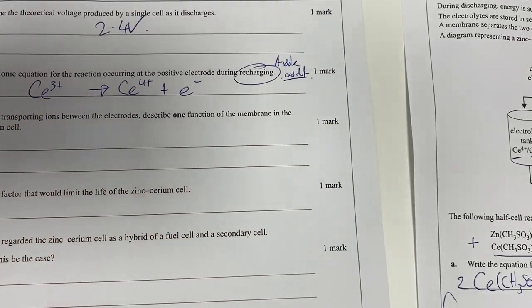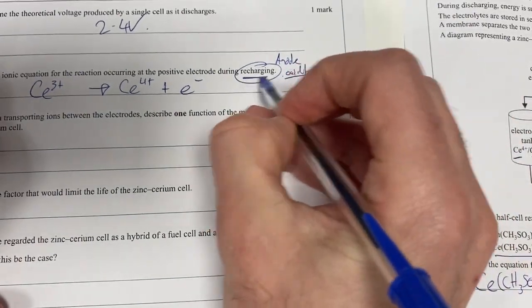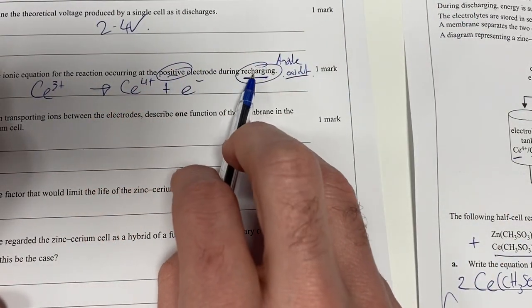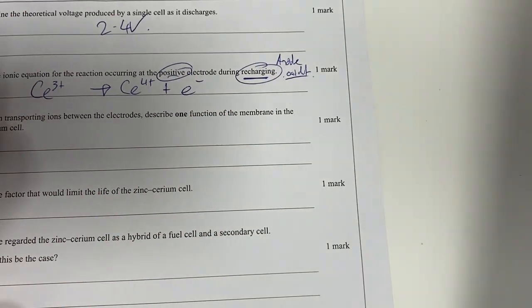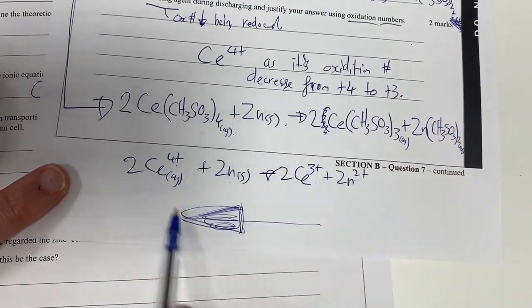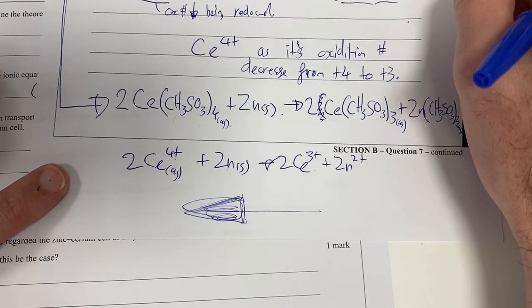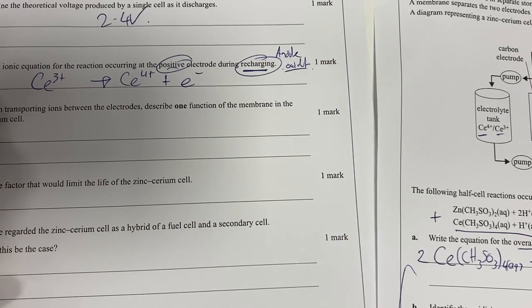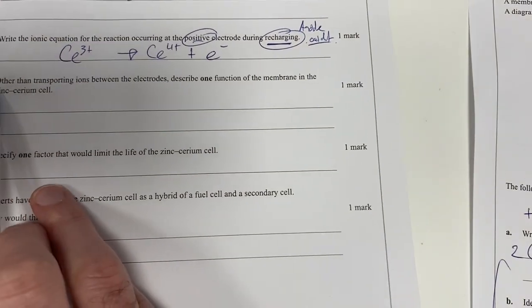That should be my answer there for the ionic equation for the recharge at the anode. I'm going through it very systematically. I'm saying recharge, I'm saying positive electrode at recharging is the anode, so therefore it's oxidation. I've got my discharge reaction here so I can try and work out what's going on there. And that's the answer, hopefully.